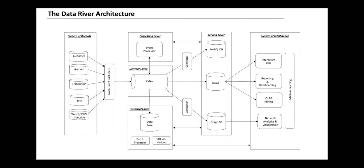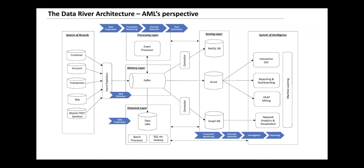Putting the pieces together: Kafka and the event publishers are where we collect the data. The event processor — our CEP engines — is where we do, in real time, the data preparation, and with a series of rule-based and machine learning models, do the transaction monitoring and anomaly detection. The serving layer and the system of intelligence together help not only with transaction monitoring and anomaly detection, but also with investigation and finally reporting of these anomalies to regulators and executives.